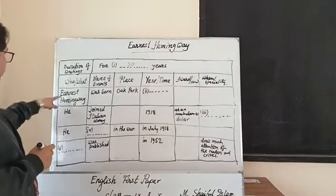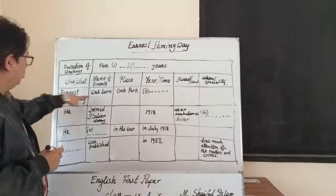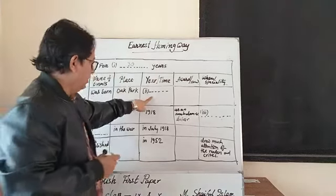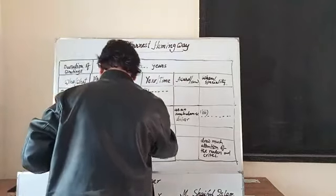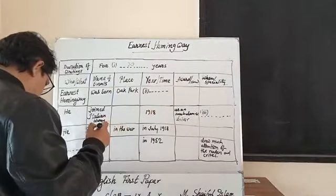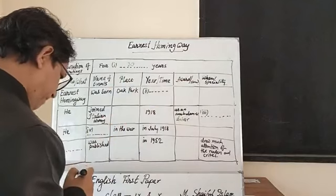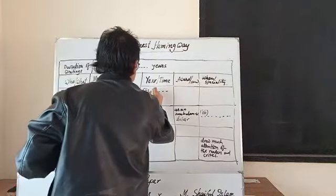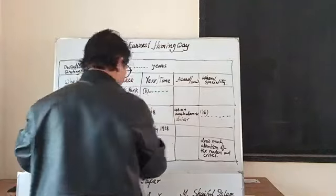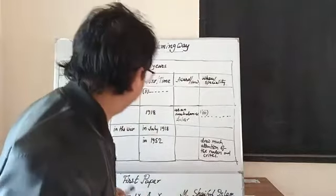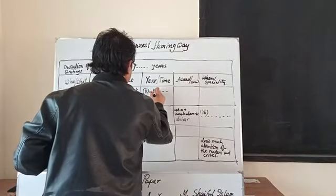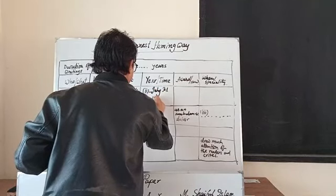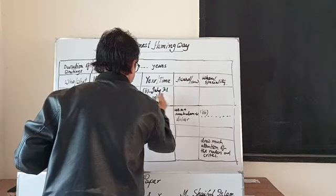Now, Ernest Hemingway was born. For the time column — when was he born and in which year? He was born on July 21, 1899.